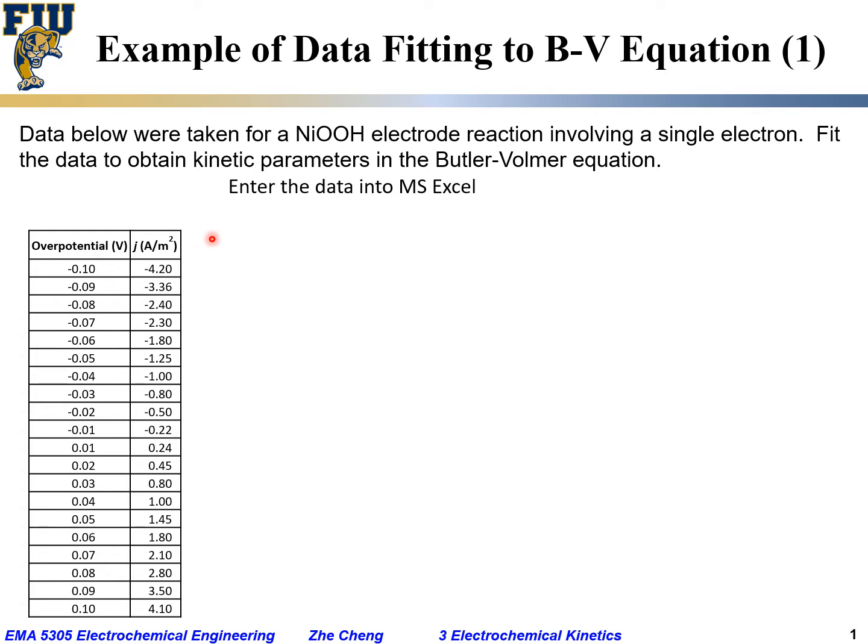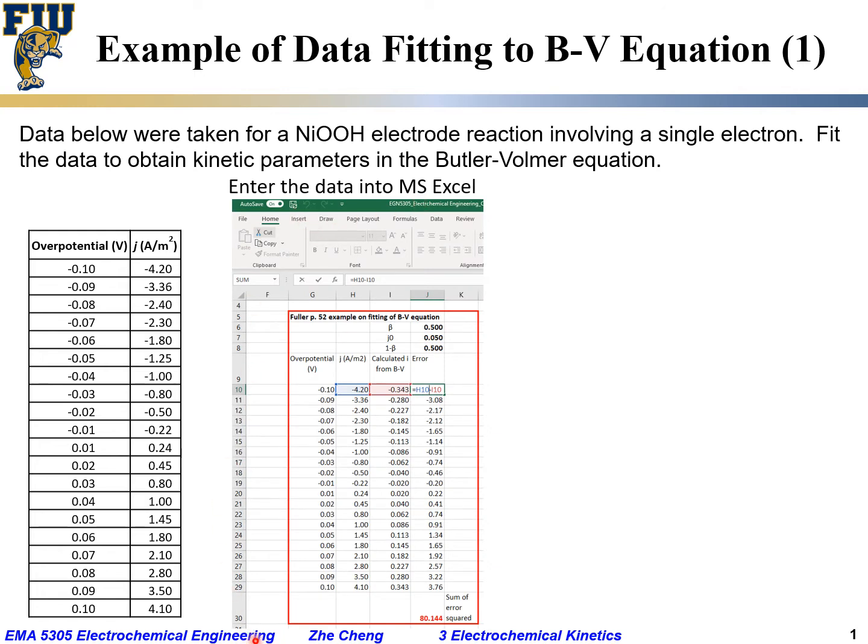To do that, you first would enter these types of data into software such as Microsoft Excel. This is a screenshot that I did. I would enter these two columns here. The first column in column G gives us the overpotential in the unit of volt. Column H gives us the measured current density in the unit of amps per meter square.